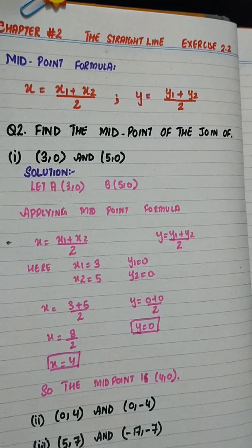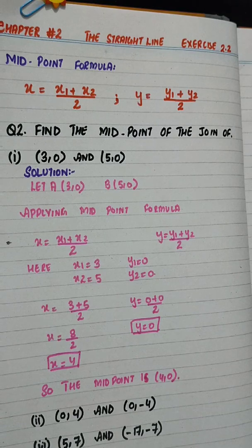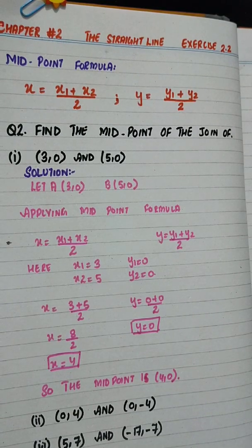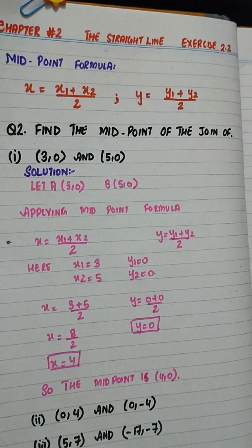Similarly, part 2 is 0,4 and 0,-4 and part 3 is 5,7 and minus 17, minus 7 will be solved in the same way. Now, we will do part 4.